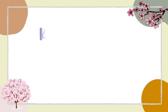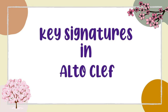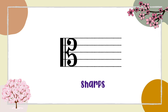Now let's take a look at how key signatures are written in alto clef. Here's the good news — the sequence of the sharps and flats are the same! The focus is to know where the notes are in alto clef. The sharps appear in this order: F sharp, C sharp, G sharp, D sharp, A sharp, E sharp, and finally B sharp. Next, let's take a look at the flats.